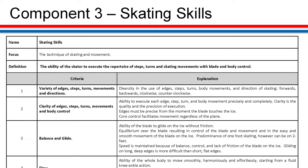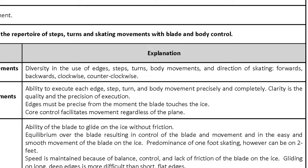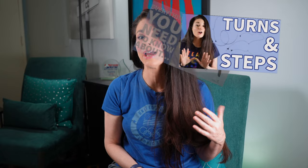But what does variety mean exactly? Variety of edges, steps, turns, movements, and directions means diversity in using edges, steps, turns, body movements, and skating direction — forward, backward, clockwise, and counterclockwise. Variety means an assortment or the state of having many different things. It is quantifiable — you can have a little variety or a ton of variety. You can use various edges, steps, turns, movements, and directions in skating. I have other videos that go into edges, steps, and turns — watch those after you finish this video; there's a link in the description.